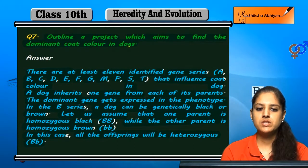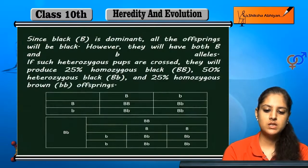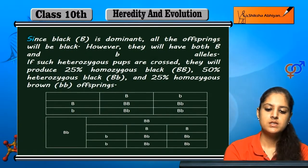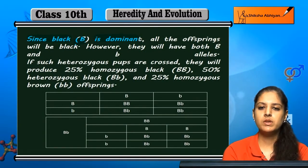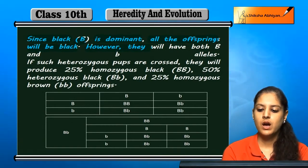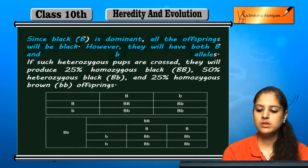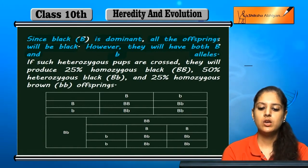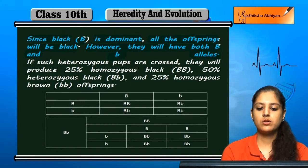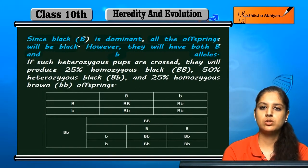All the offspring will be black because black is dominant. However, they will carry both black and brown alleles — they will be black in phenotype but heterozygous in genotype.